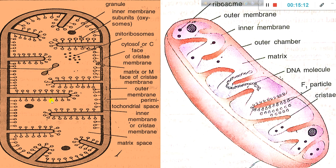The F1 particles have a head, body, and base. The size is 68 nanometers and they are spaced about 10 nanometers apart.